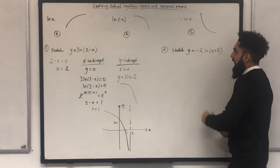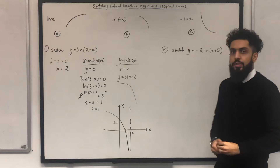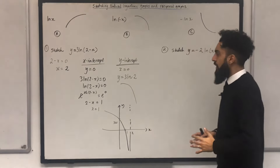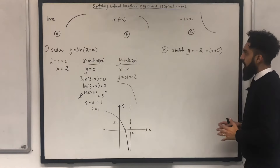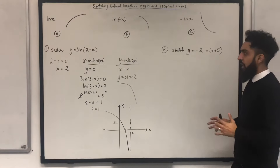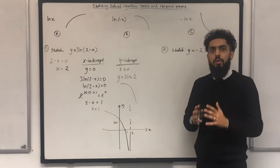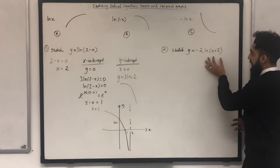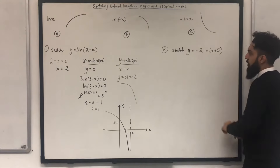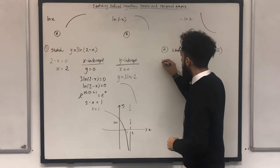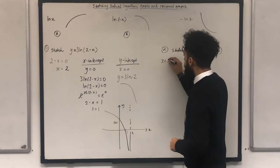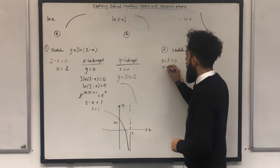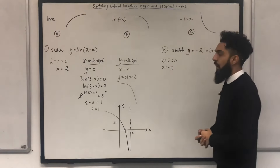Let's have a look at question number 2. Sketch y = -2ln(x + 5). The very first step is to work out the equation of the asymptote — set what's inside the bracket equal to 0. So x + 5 = 0, giving x = -5.